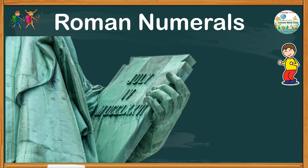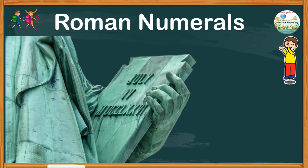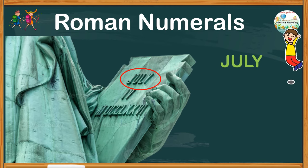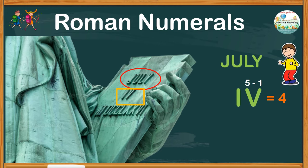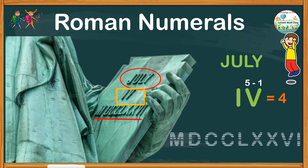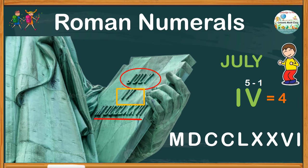Here is an image of the Lady Liberty holding a tablet. Help me figure out what is written on the tablet. This one says July, obviously. IV is 5 minus 1, which is 4. And the multiple letters, M, D, C, C, L, X, X, V, I.